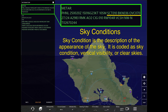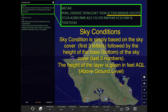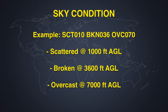Sky conditions are coded to describe the sky cover. It's coded with three letters and three numbers that give you the description of the type of sky cover and the altitude of that sky cover. The first three will be the descriptor of the cloud cover or the sky condition, and then the last three will be the height of the layer, which is given in AGL or above ground level.